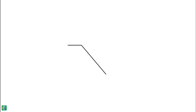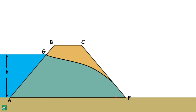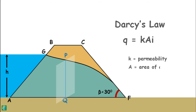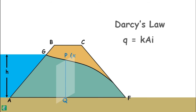Now let's estimate the seepage through an earth dam with a discharge angle less than 30 degrees. Consider any section of the flow named PQ. The flow of free water through soil is governed by Darcy's law, so discharge through this section is q = k × a × i, where k is the permeability of the dam material, a is the area of cross section through which seepage water passes, and i is the hydraulic gradient. If the coordinates of point P are (x, y), then the height of this section at distance x from the origin is y.